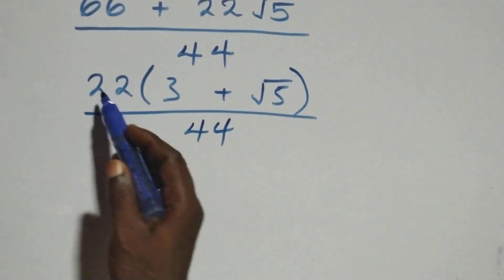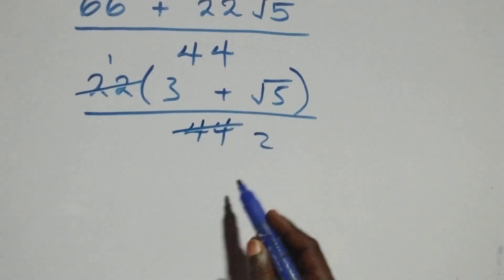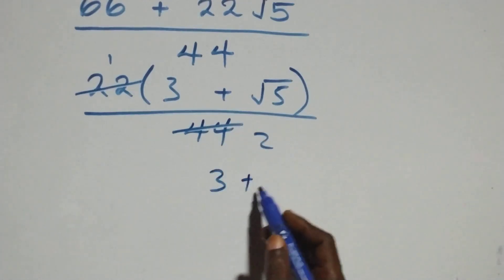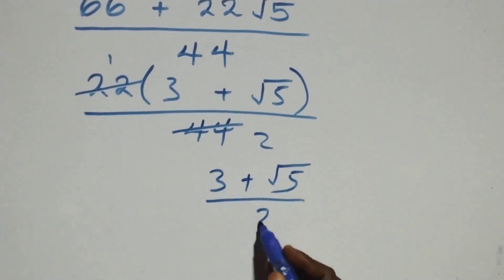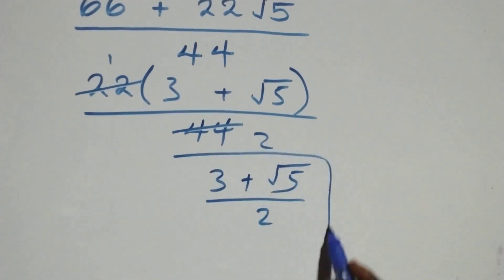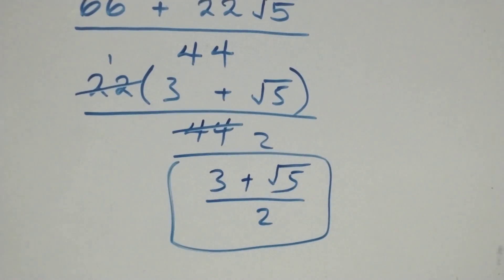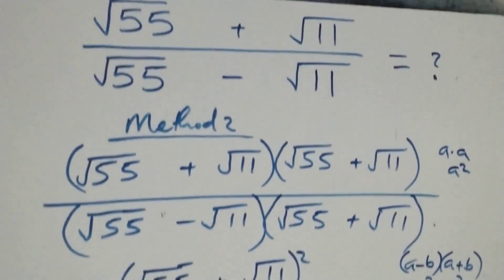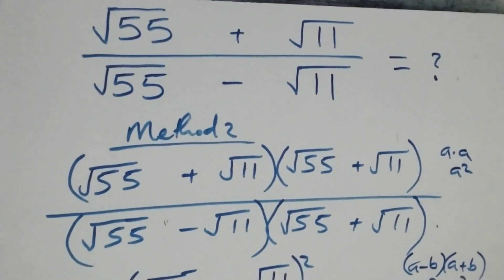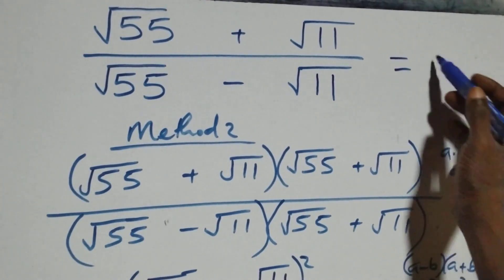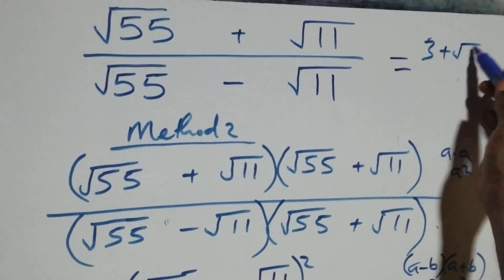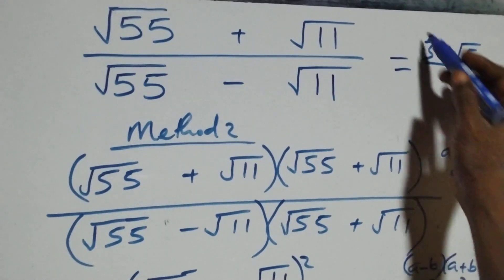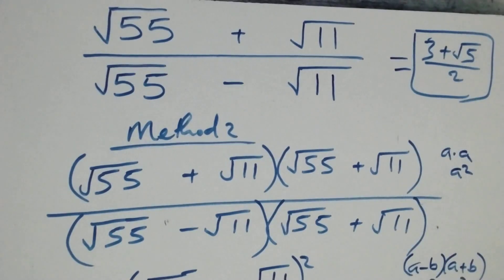Then 22 goes into 44 twice, giving us three plus root five over two — the same result as Method 1. So we conclude that the given problem simplifies to three plus root five over two. Thank you for watching. Don't forget to subscribe for more videos, share this video, give a thumbs up, put your comment, and see you next class. Bye for now.